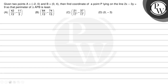Hello. Let us read the question. Given two points A equal (-2, 0) and B equal (0, 4). Find the coordinate of a point P lying on the line 2x minus 3y equal 9, so that the perimeter of triangle APB is least. Option A: (42/13, -11/3). Option B: (84/13, -74/13). Option C: (21/17, -37/17). Option D: (0, -3).